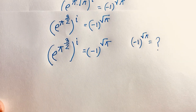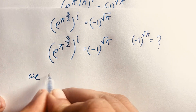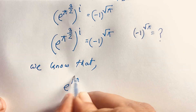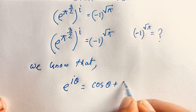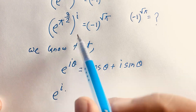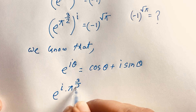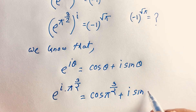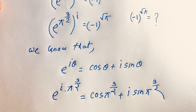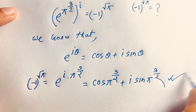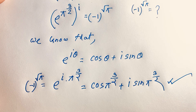Now we know the Euler equation: e to the power i·theta is equal to cos theta plus i sine theta. Applying this with theta equal to pi to the power three over two, we get: minus one to the power square root pi is equal to cos of pi to the power three over two plus i sine of pi to the power three over two. This is the answer. Thank you all — if you enjoyed this video please subscribe to my channel for other interesting videos. Goodbye, take care.